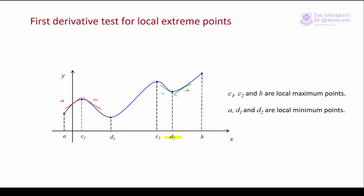For a point somewhere between D1 and C2 — we might call that point F — we see that below F the slope is positive, and above F the slope is also positive. The first derivative doesn't change sign as we go from points below F to points above F, so F is not an extreme point.